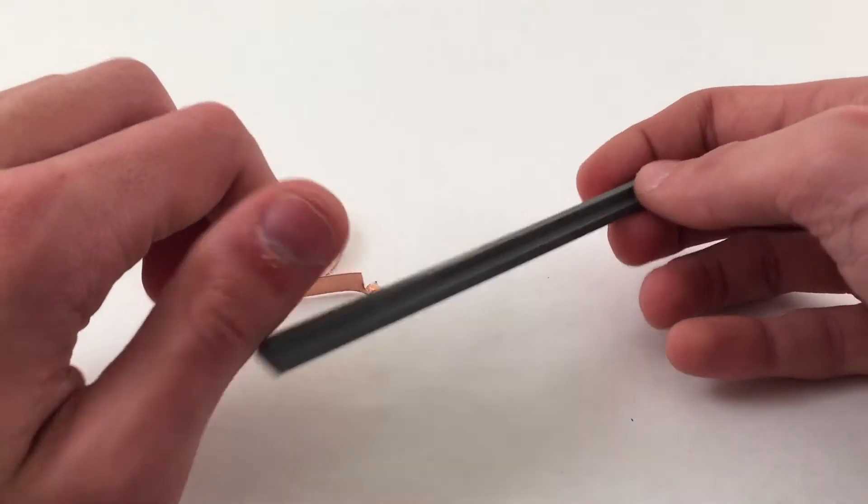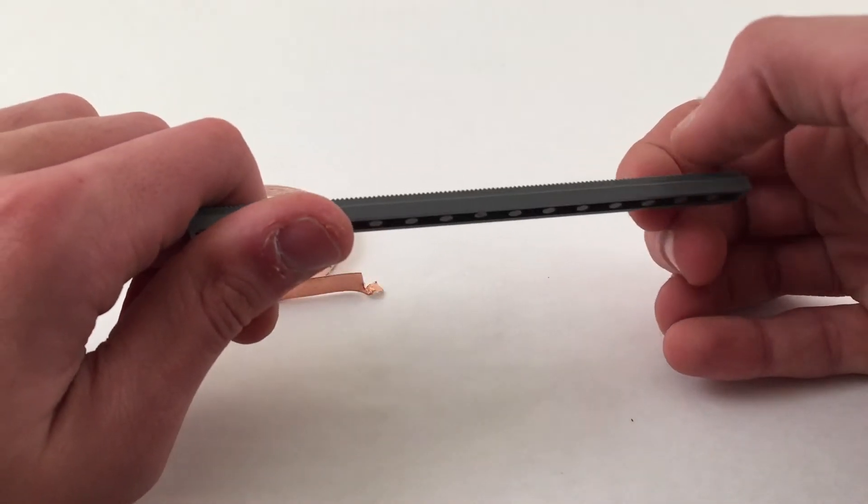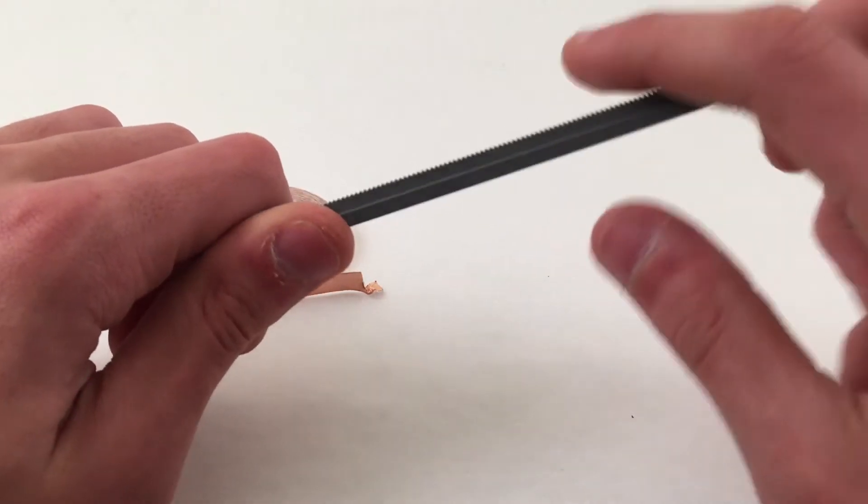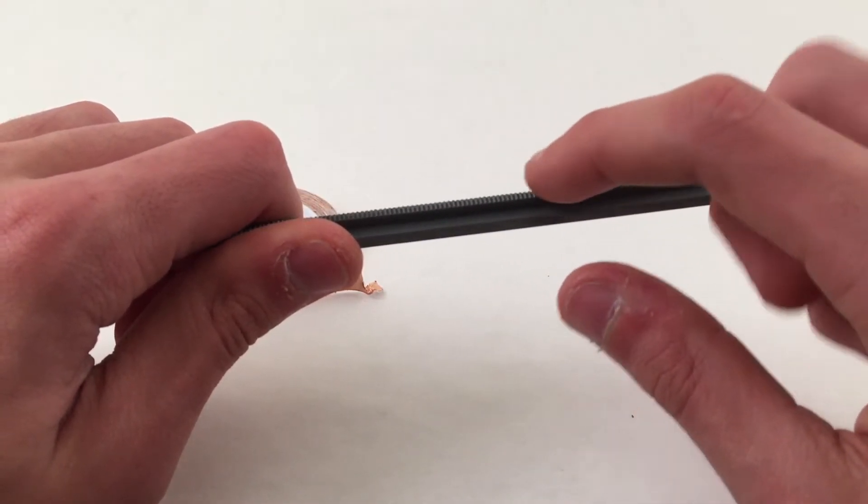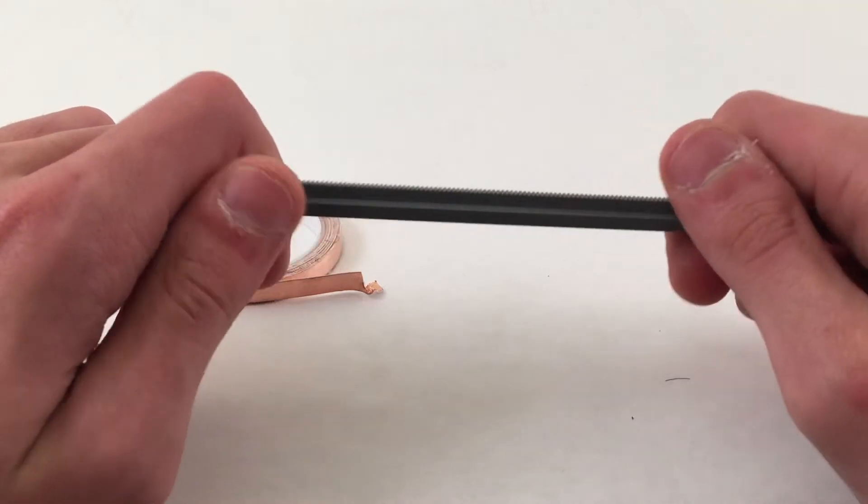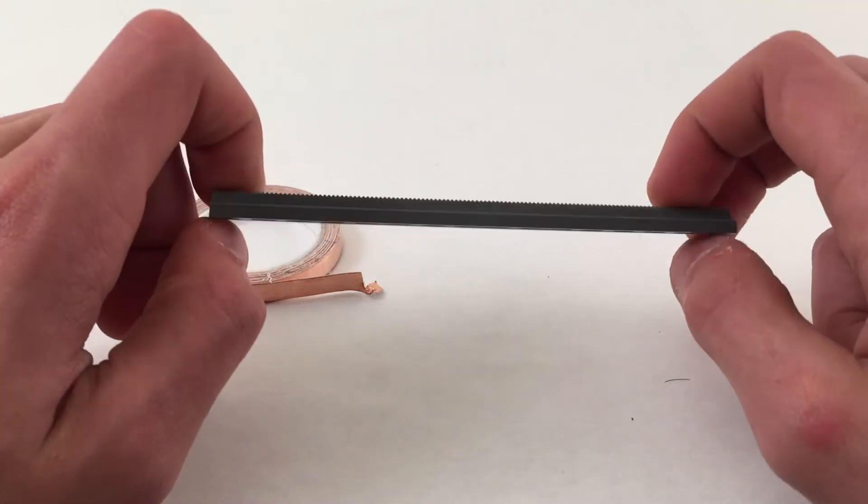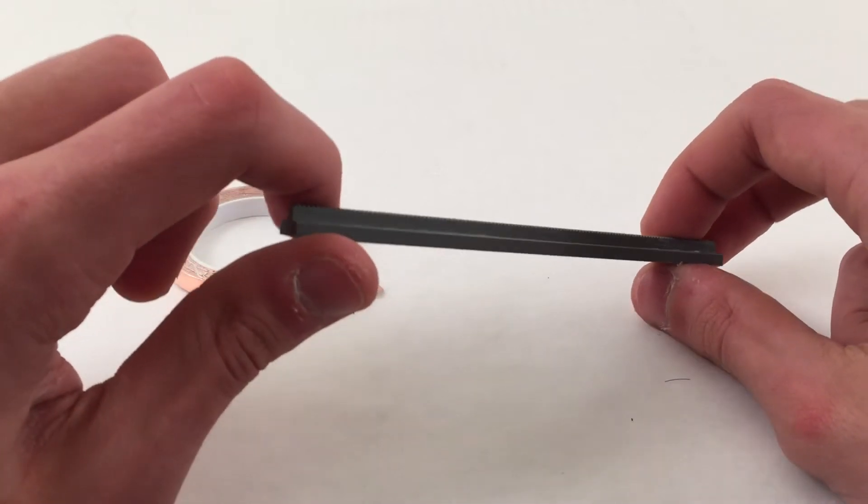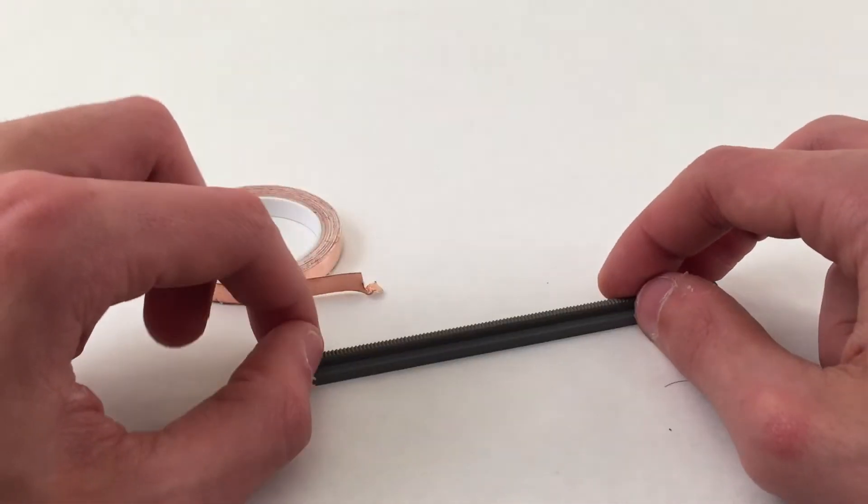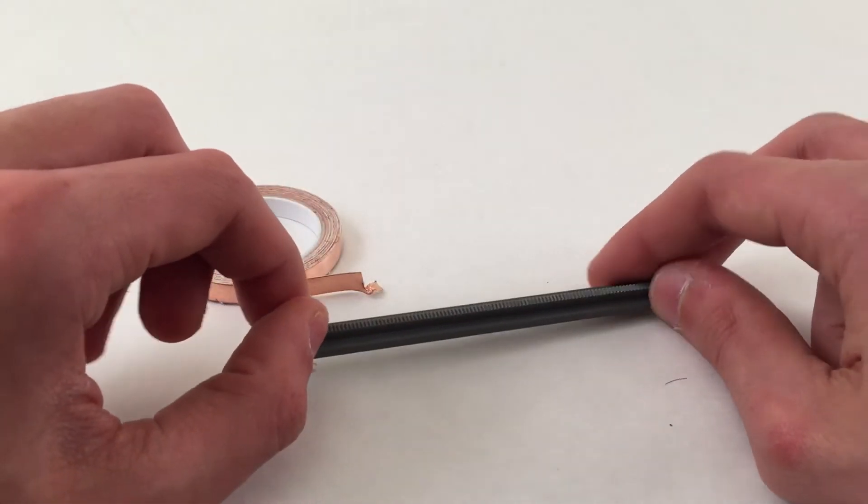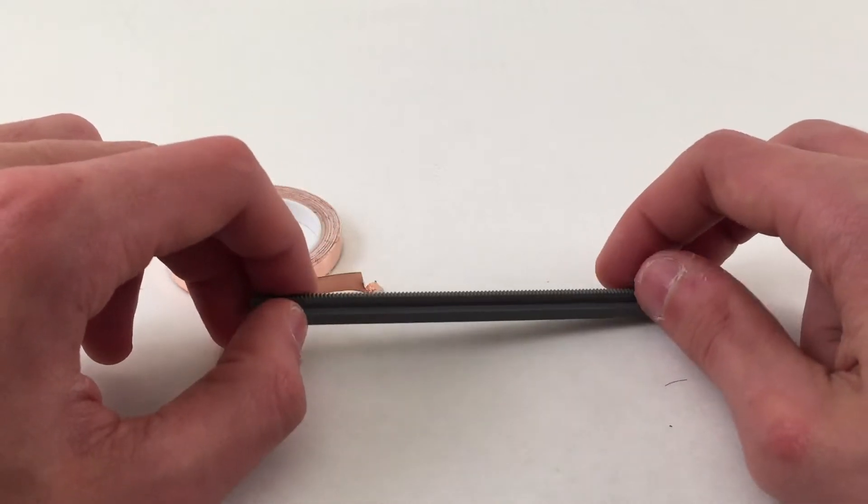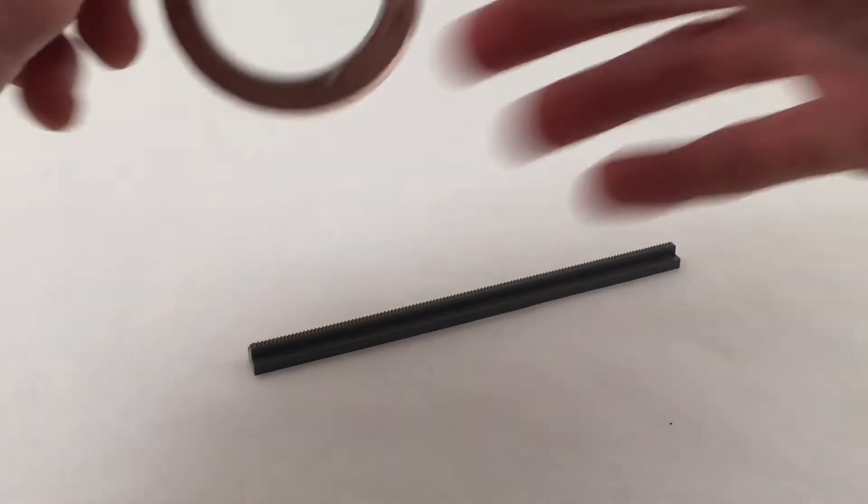I think it would actually probably work better than with these because these also have these little serrations which would probably make it a little bit tougher for the tape to grip it, but I've used these and they worked all right for me. I would recommend using the actual plastic tracks to do this.